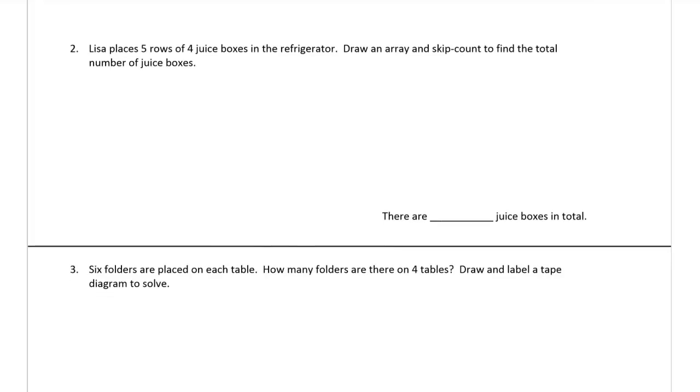Number two. Lisa places five rows of four juice boxes in the refrigerator. Draw an array and skip count to find the total number of juice boxes. So we've got a piece of tape. We don't know how many juice boxes there are, but we do know that there's one, two, three, four lines makes five rows, so each row is a box, and there's four in each box.